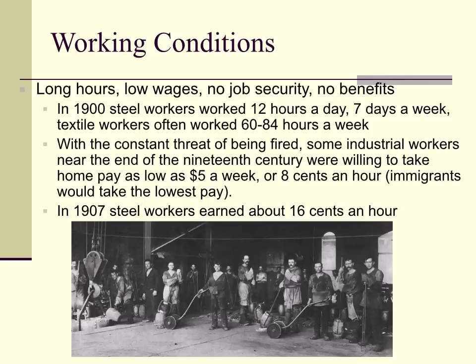More working conditions: very long hours, very low wages, no job security — there was always somebody to replace you — and no benefits, meaning no health care, no paid vacation. In 1900, steel workers worked 12 hours a day, 7 days a week, and textile workers often worked 60 to 84 hours a week.